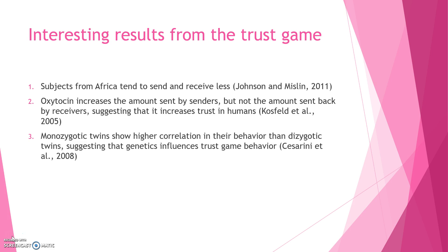The second is that oxytocin, a neuropeptide shown to play a crucial role in social affiliation and attachment, increases the amount sent by senders, but not the amount sent back by receivers, suggesting that oxytocin increases trust in humans.